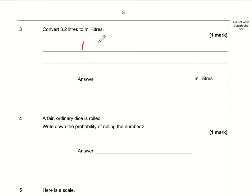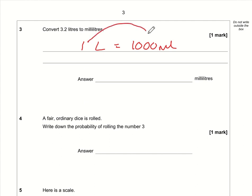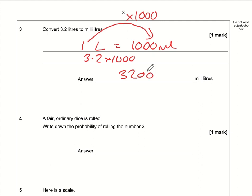Question 3: we're converting litres to millilitres. We need to remember that one litre is 1000 millilitres. To convert litres to millilitres we multiply by 1000, so the calculation is 3.2 times 1000, which gives 3200 millilitres.